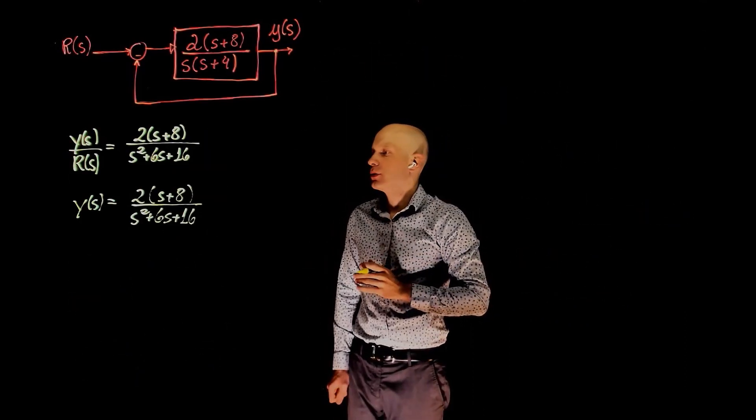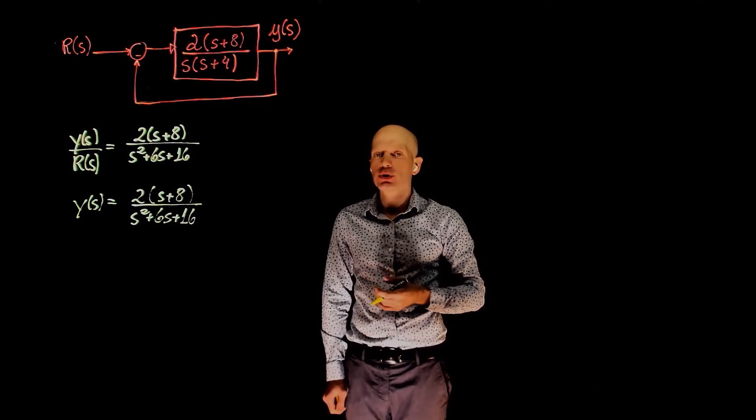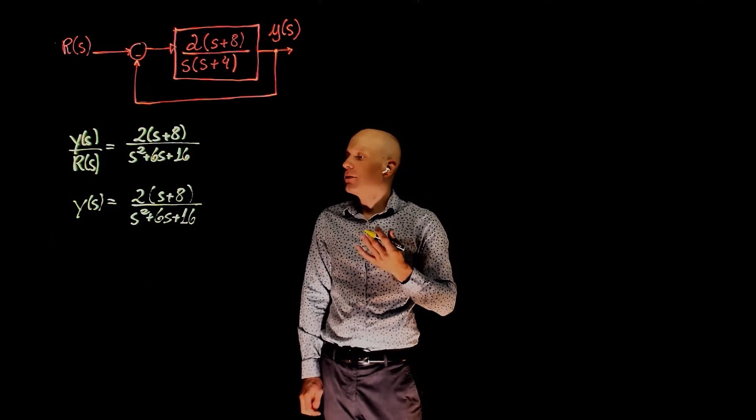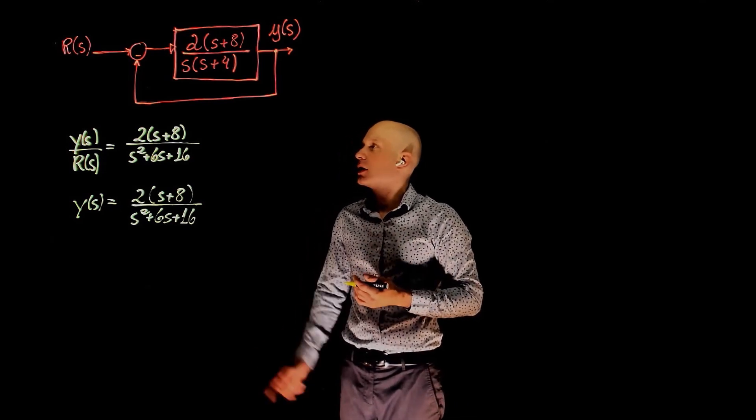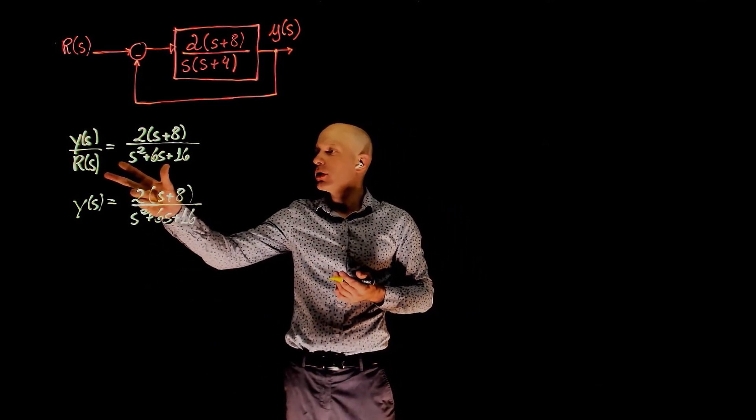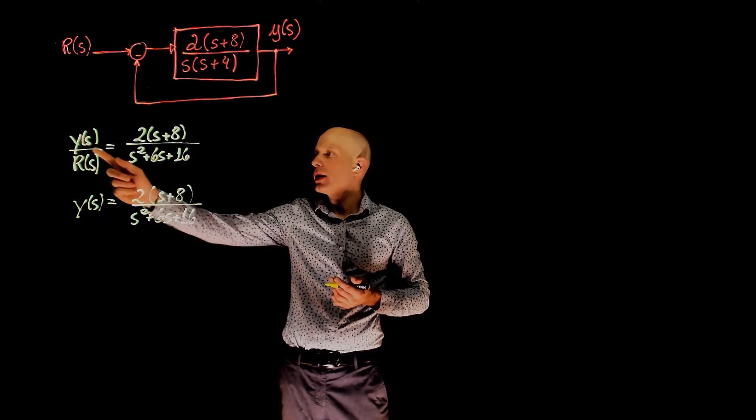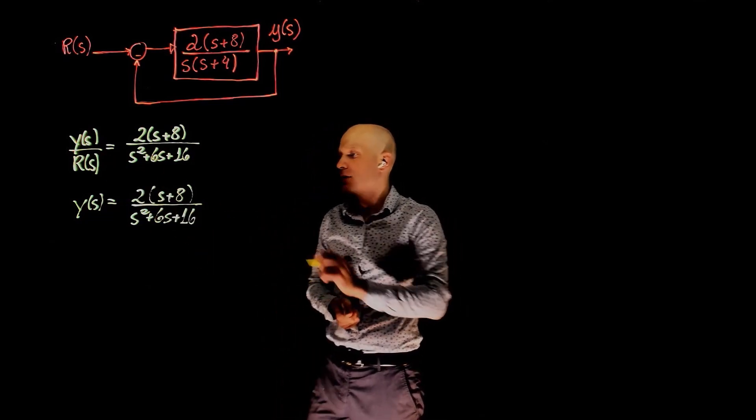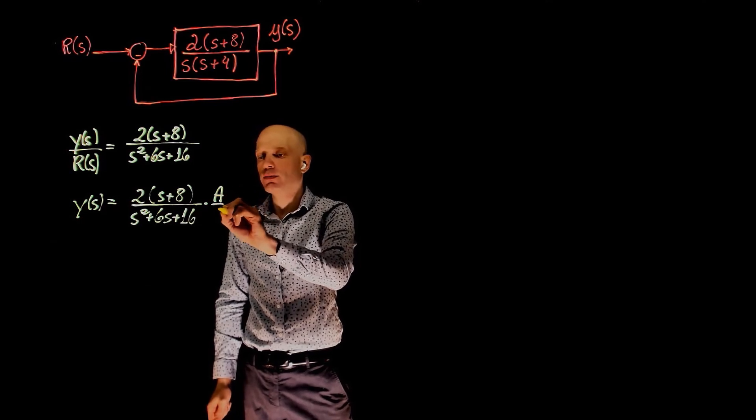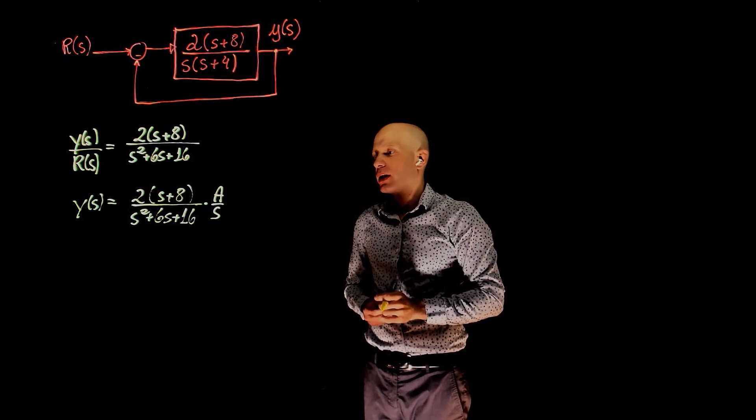In the second part of this exercise, we're interested in the steady-state error when a step of magnitude a is applied to the system. If a step of magnitude a is applied, then r of s is a over s. So here is the transfer function we found before. If we now multiply both sides here by r of s, we get the expression for y of s. So by multiplying this by a over s, which is the input we are considering now, we get the expression for the time response.